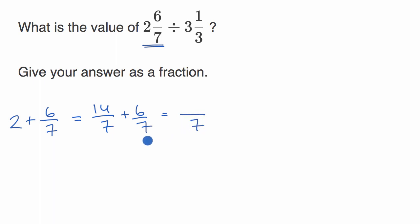So 14-sevenths plus six-sevenths, well, I have a common denominator here, so we're speaking in terms of sevens. So I have 14 of something plus six of something, well, now I'm going to have 20-sevenths. So this first mixed number I could rewrite as 20 over seven,